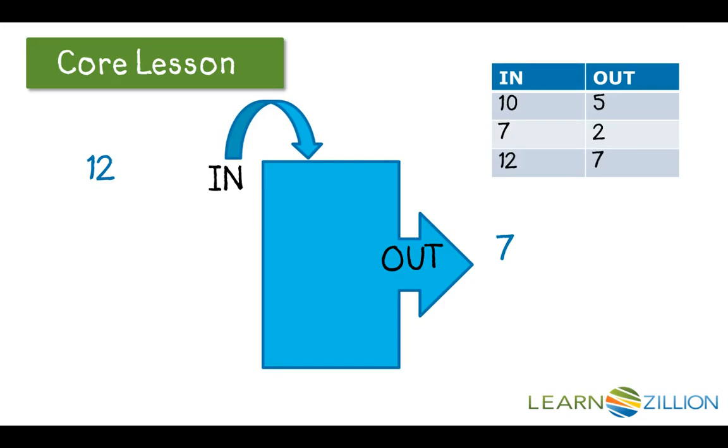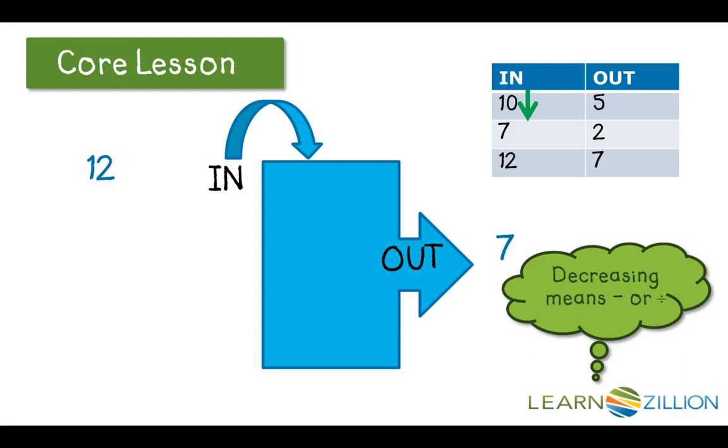Now let's look at this. We were thinking that the numbers were decreasing. And each time we look at each number pair, I do see that it's true. They are decreasing. So I'm thinking decreasing means we're either subtracting or dividing.